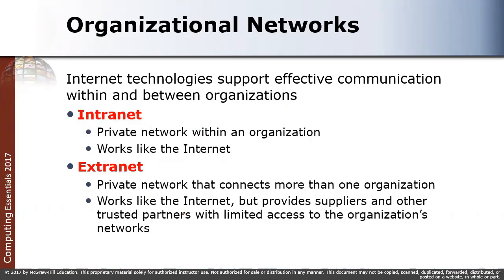In organizational networks there are two types: intranet and extranet. Internet technology supports effective communication within and between organizations. An intranet is a private network within an organization that works like the internet — for example, certain UiTM systems require you to be within UiTM to access them. An extranet is a private network connecting more than one organization — for example, connecting UiTM Jengka's intranet with UiTM Raub's intranet.